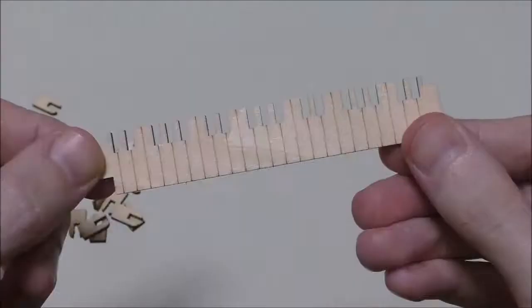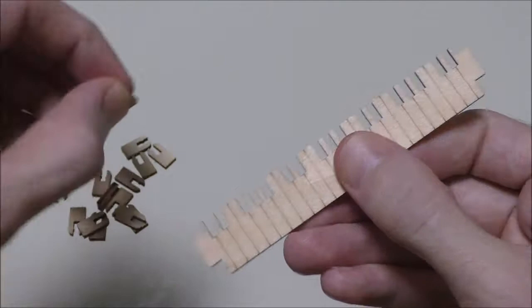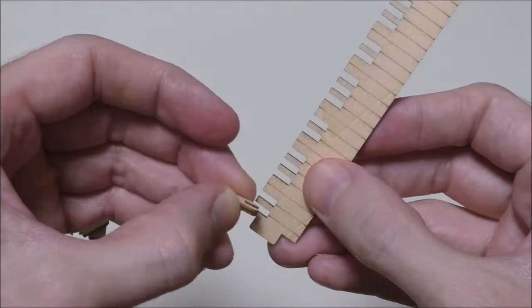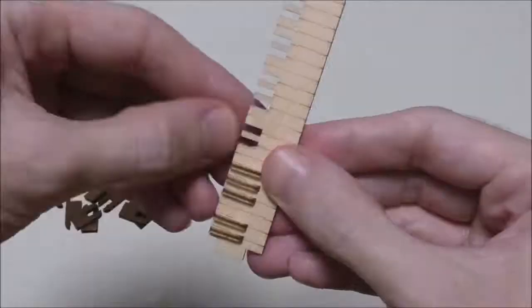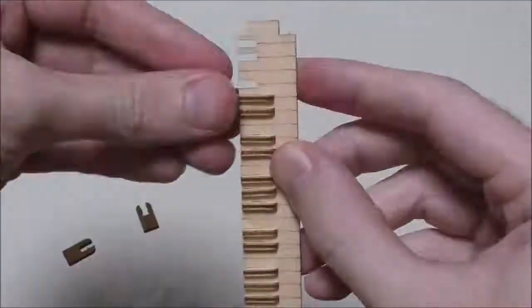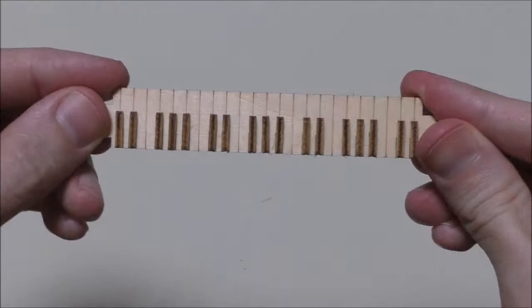We need to take part A7 here and then we simply take these A2 parts. There are 17 and they simply slot in between there and they should run level with the end like that, and you just need to do that all the way along.